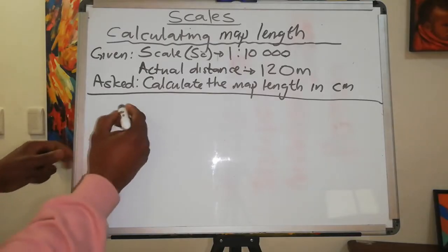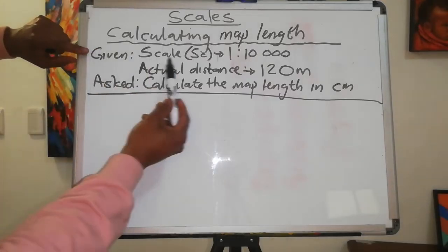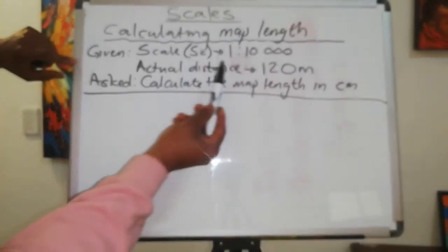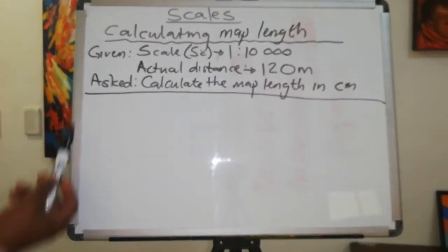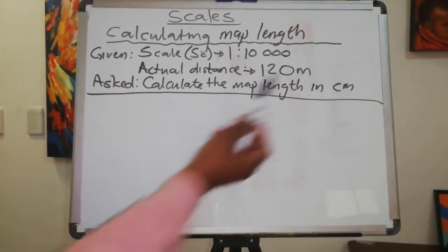We are going to use the same formula again, but now we have been given the following. We have been given the scale. The scale is 1 to 10,000. This is a ratio scale, and the actual distance is 120 meters. The question is asking us to calculate the map length in centimeters.